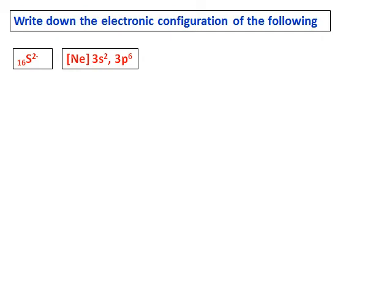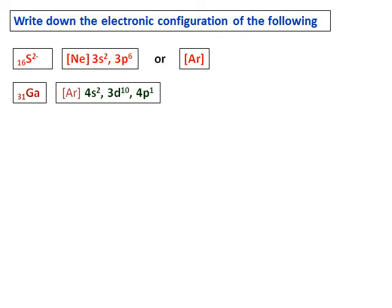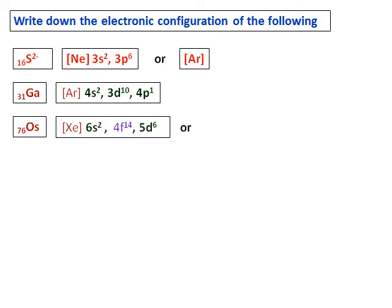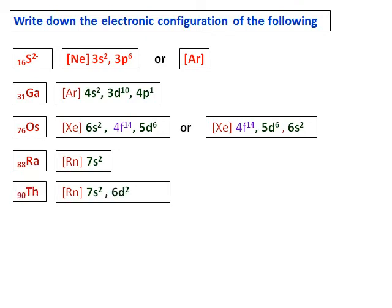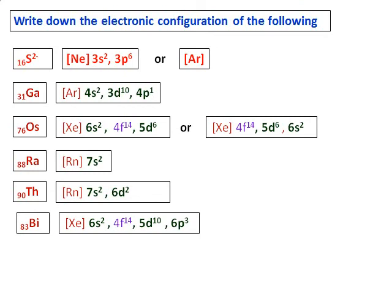Let's do some mixed examples. S2− has two extra electrons, giving [Ne] 3s2 3p6, equivalent to argon. Gallium-31: use the periodic table, choose the inert gas, and write the rest. Osmium and thorium configurations are also given — note that even if we fill 4f first by the Aufbau principle, the ordering may differ when electrons are removed. Always keep a periodic table handy.